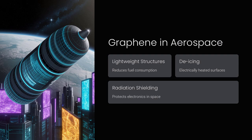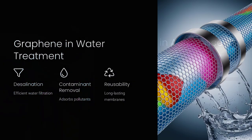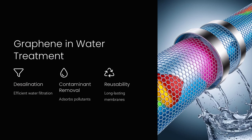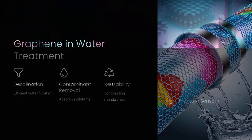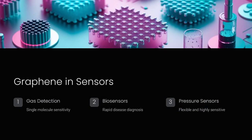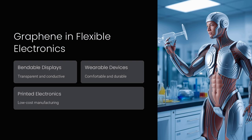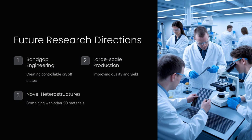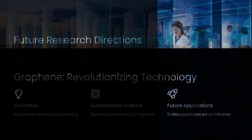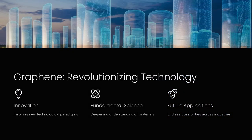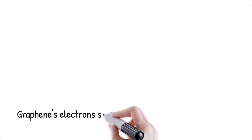Graphene's conductivity anomaly isn't just a scientific curiosity — it forces us to rethink the very nature of electron behavior in solids. If electrons can move with such little resistance, are there other undiscovered materials that might rival graphene or even surpass it? Could we one day engineer materials where electrons move with zero loss without needing extreme conditions like in superconductors? The answers to these questions could redefine the future of electronics, computing, and materials science.